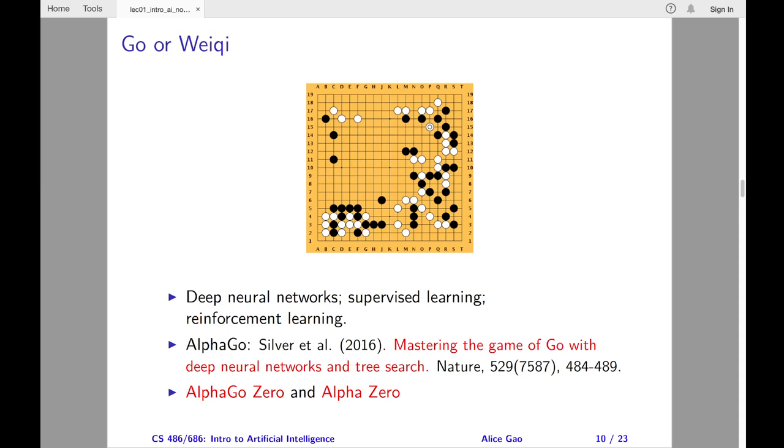AlphaGo was still based on tree search. However, it made use of two deep convolutional neural networks to reduce the effective depth and breadth of the search tree. AlphaGo trained the two networks using supervised learning on human data and reinforcement learning through self-play.